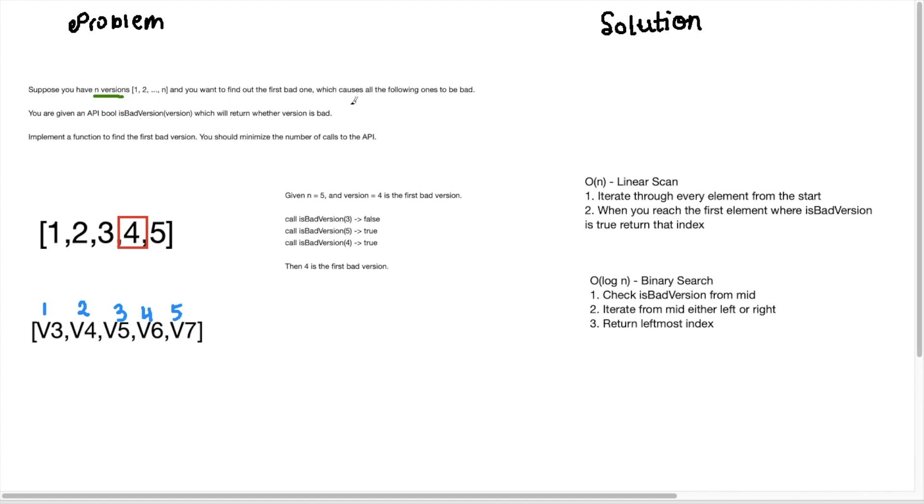So it will return true if the version is good and it will return false if it's a bad version. So if we try to do this manually, let's say we have our bad version here at four and if I called is bad version on three it would give me false because the bad version starts from here.